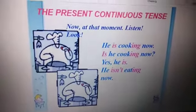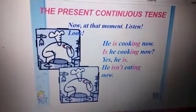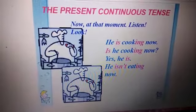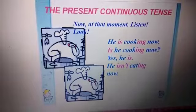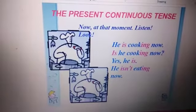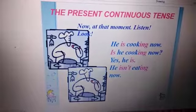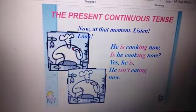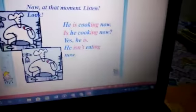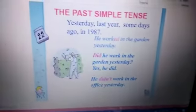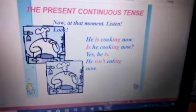What do you notice? 'Cooking now' — it is talking of an action that is going on now, at that moment. So it is the present continuous tense. Now let's see the next, that is the past continuous tense.